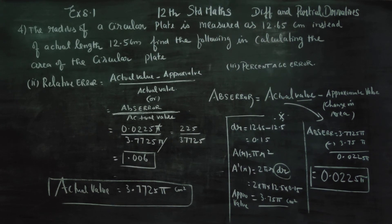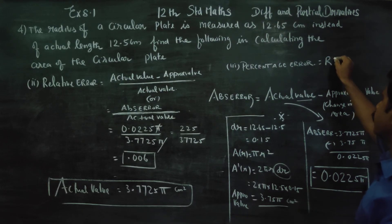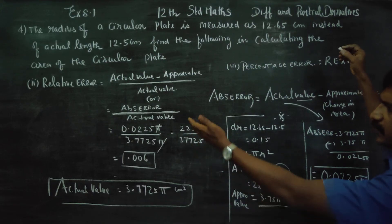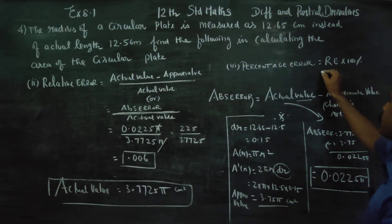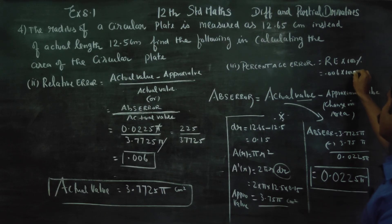Percentage of error is one of the error types. Percentage error = relative error × 100 = 0.006 × 100 = 0.6%. The relative error is 0.006 and the percentage of error is 0.6%.